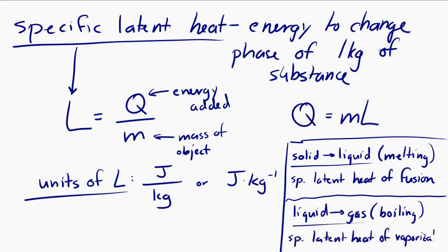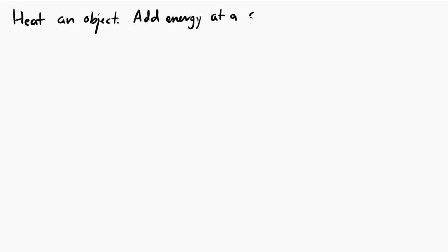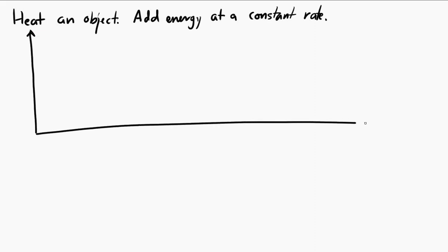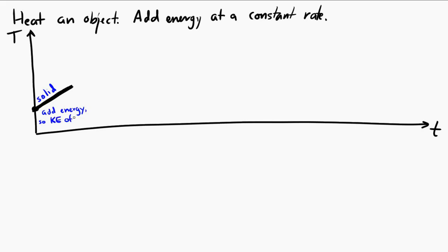Let's put this all together as a graph. We have a situation where we're heating a solid by adding energy at a constant rate, and we'll make a graph of temperature versus time. We're always pumping in the same amount of thermal energy. It starts out as a solid at a relatively low temperature. As we add energy, we increase the kinetic energy of the molecules — each molecule on average gains energy, moving faster and faster. So the temperature increases and increases until it reaches the melting point.